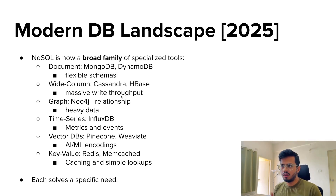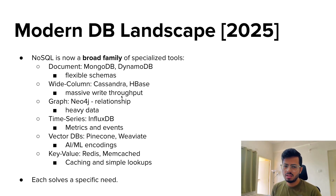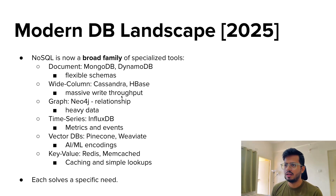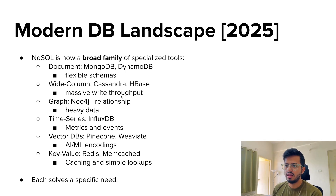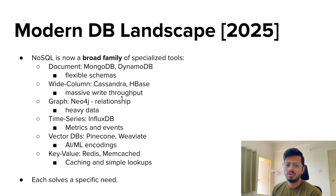In the modern DB landscape of 2025, NoSQL is a broader family of specialized tools. For documents, we have MongoDB and DynamoDB focusing on flexible schema. For wide column, Cassandra and HBase cater to massive write throughput. For graphs, Neo4j focuses on relationship-heavy data. For time series, InfluxDB focuses on metrics and events. For vector search, Pinecone and Weaviate serve AI and ML use cases. For key-value, Redis and Memcached handle caching and simple lookups.